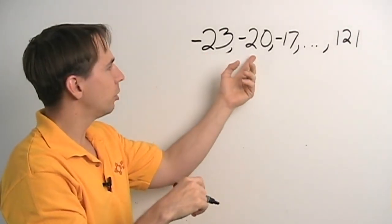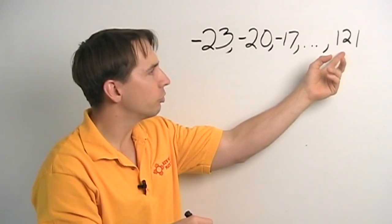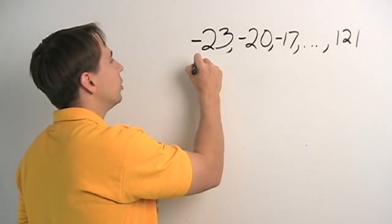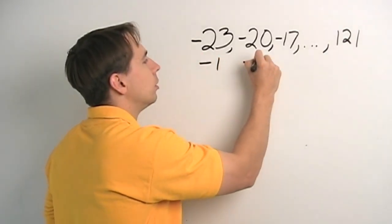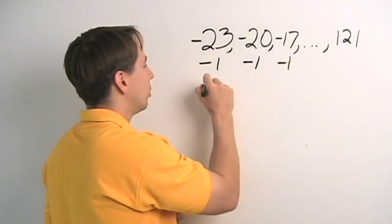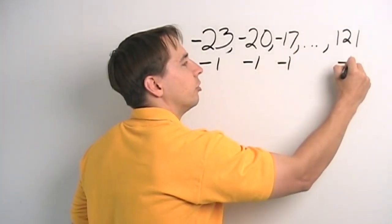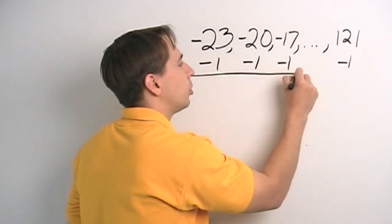These are all 1 more than a multiple of 3. This is 1 more than negative 24. This is 1 more than negative 21. This is 1 more than 120. So, we subtract 1 from each number in this list. And again, this doesn't change the number of numbers in the list. So, this is perfectly okay.